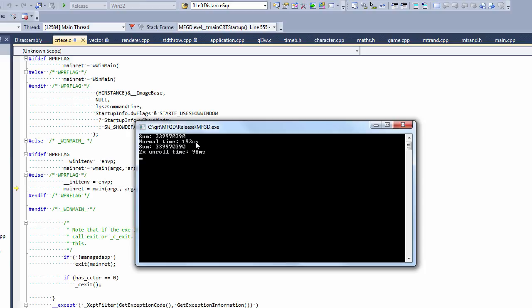But you can see that the normal algorithm, its time was 193 milliseconds. And when we did the 2x unrolling, we reduced that to almost half, by almost half, to 98 milliseconds.